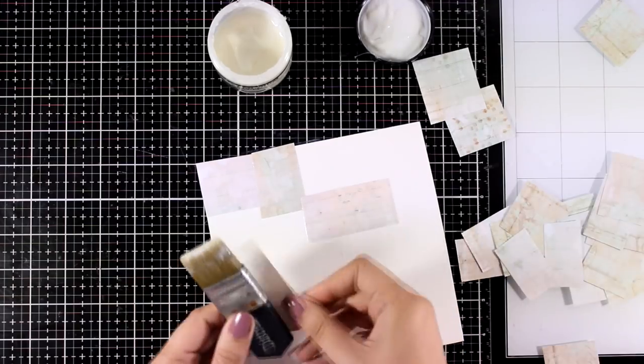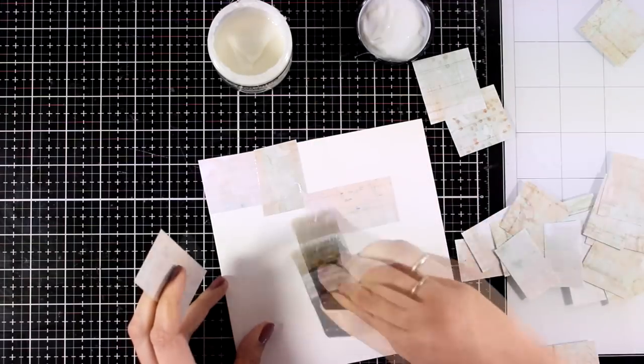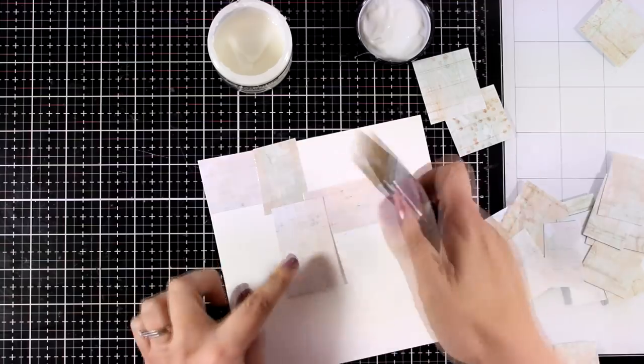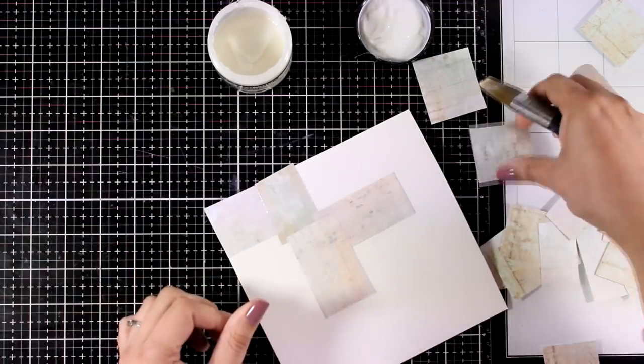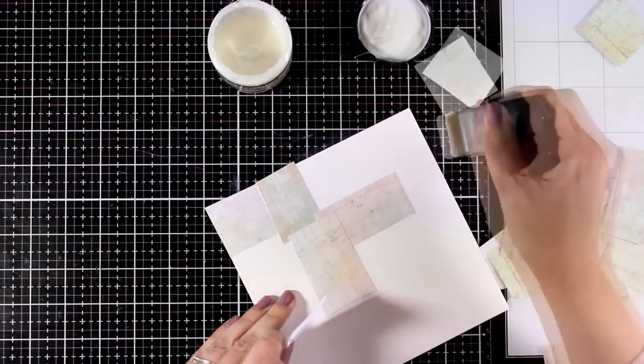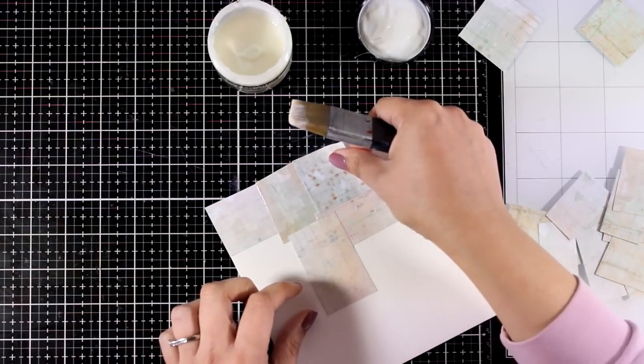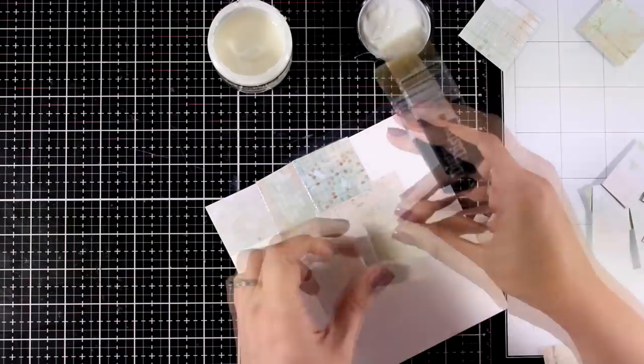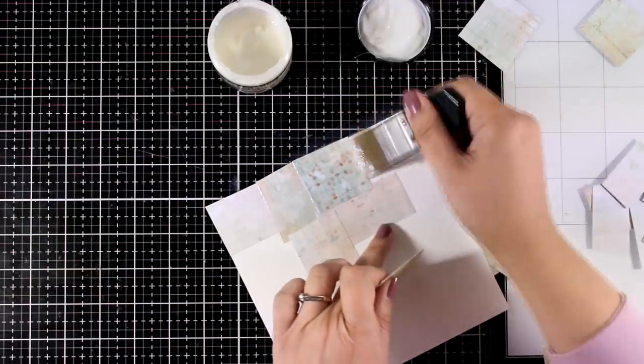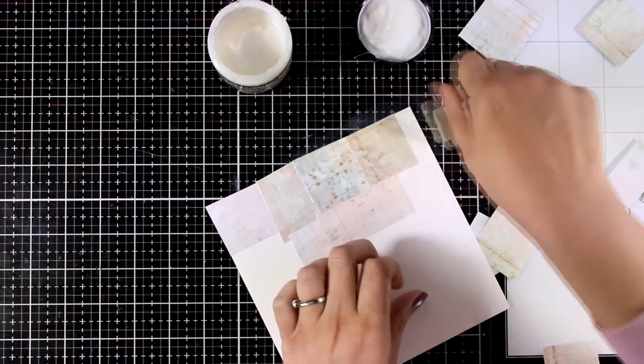As I stick them down, I make sure that I overlap the edges. This way I will end up having lots of texture at the end. Make sure that you don't stick them next to each other—overlap them. It really makes a big difference. Also, I don't care if some of the pieces go outside my watercolor paper; I can always use my scissors at the end and cut out any excess.